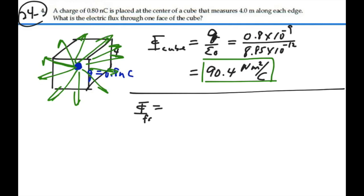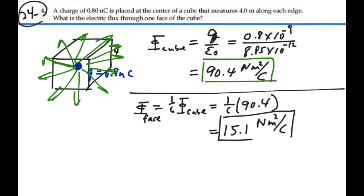So the flux through one face is one-sixth of the flux going through the cube, and that is going to be one-sixth times 90.4, which would be 15.1 Nm squared per coulomb. That would be the flux through one face. It's positive, which means the flux is exiting. It's going outward from the cube, 15.1 Nm squared per coulomb.